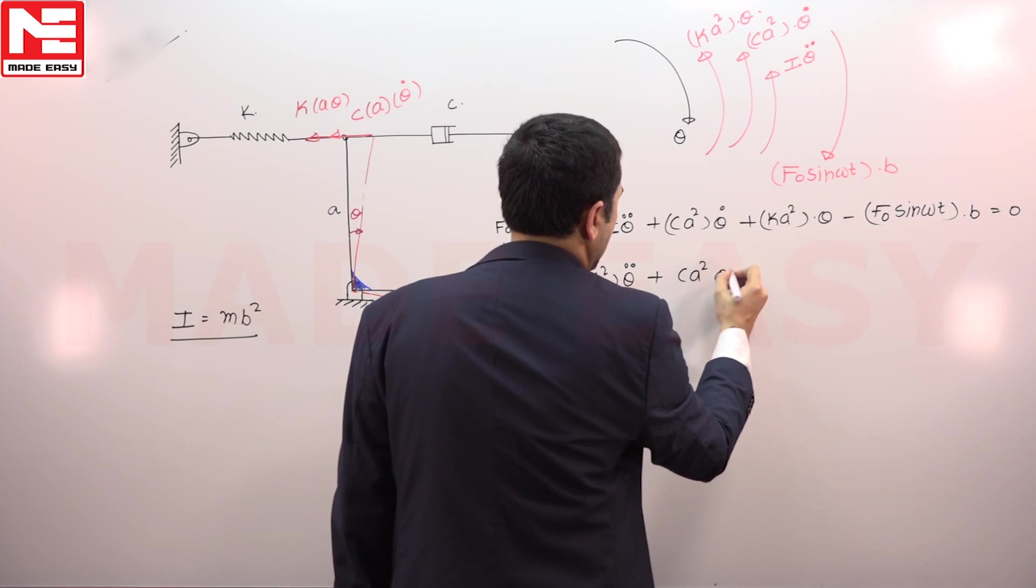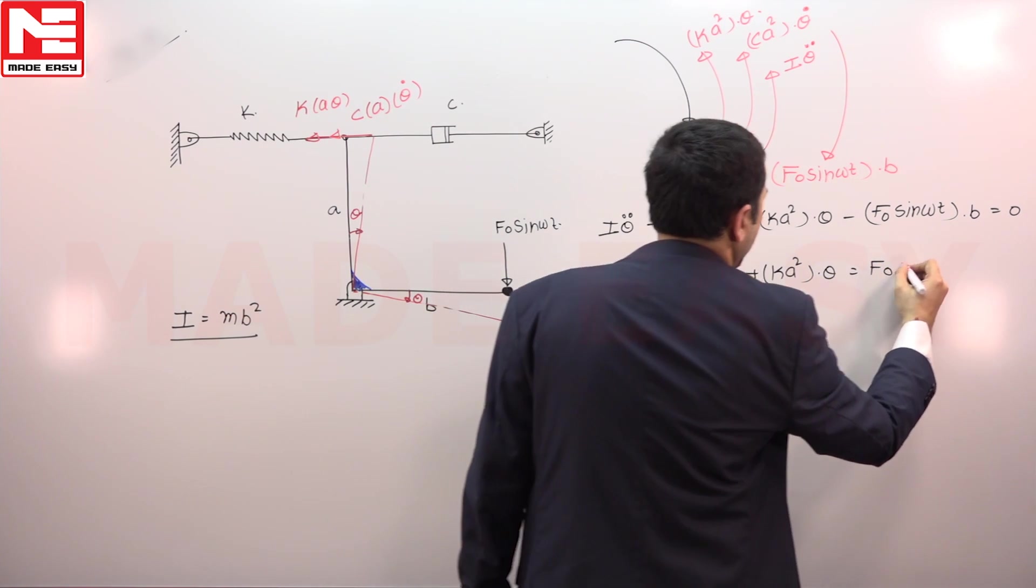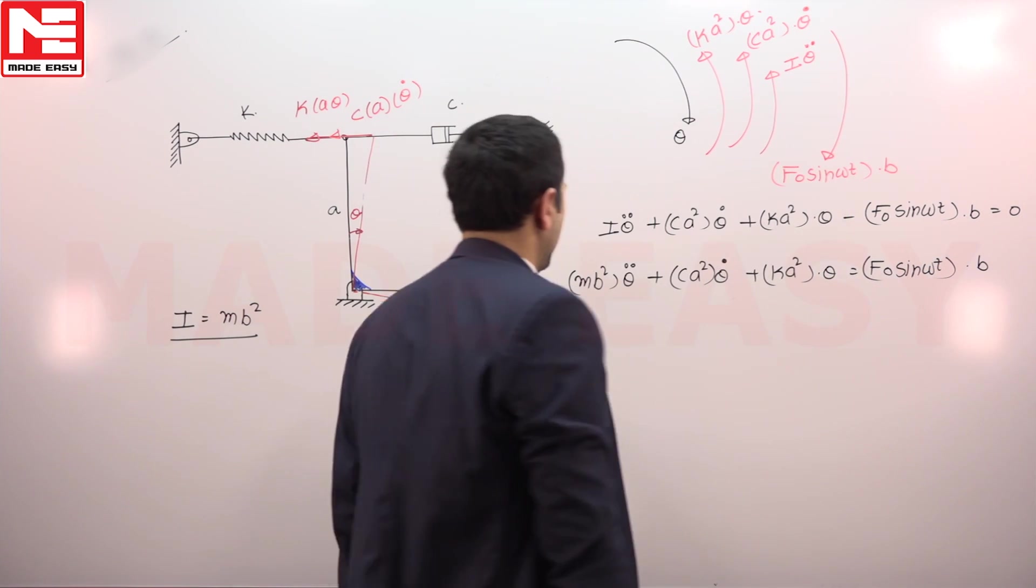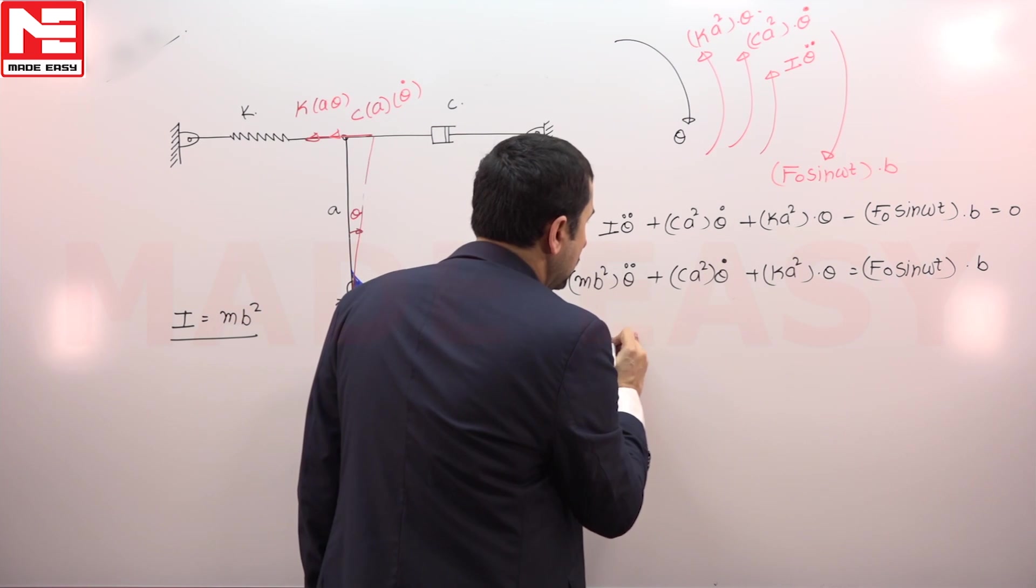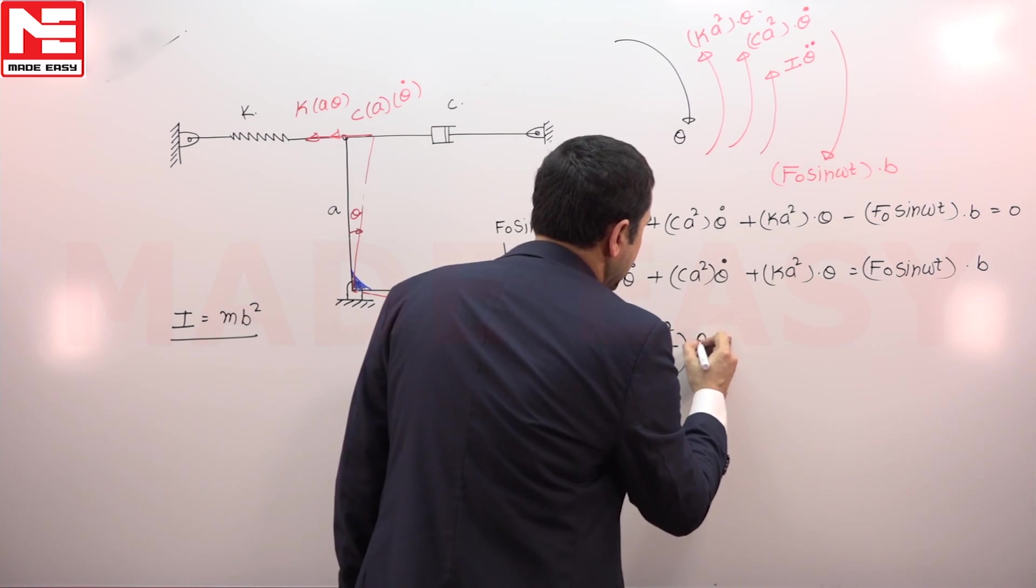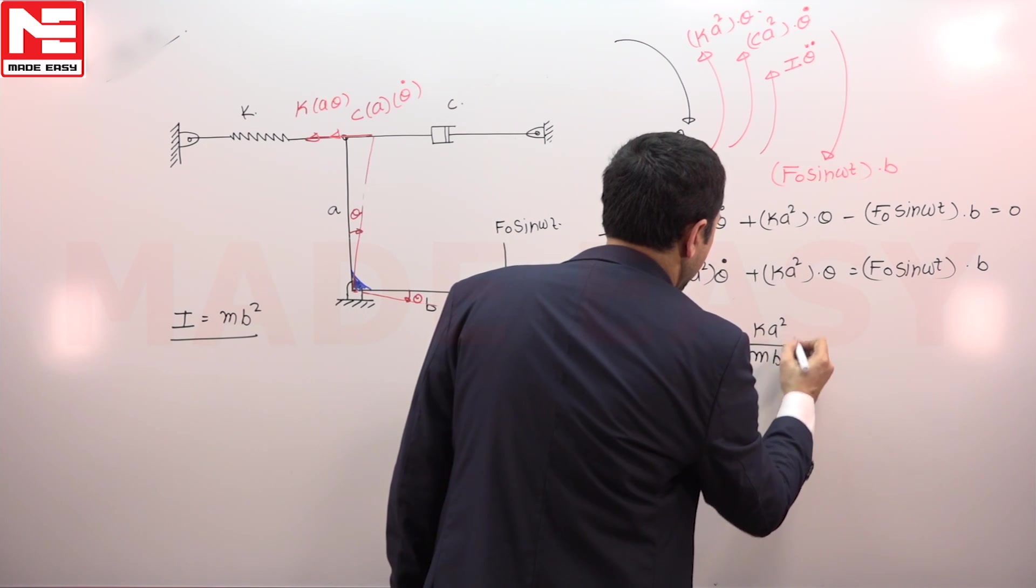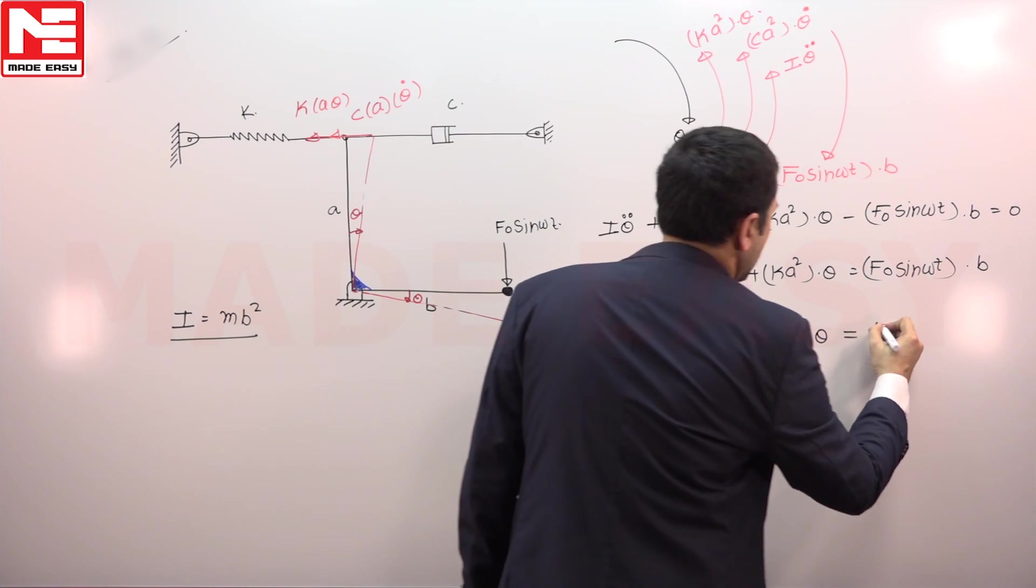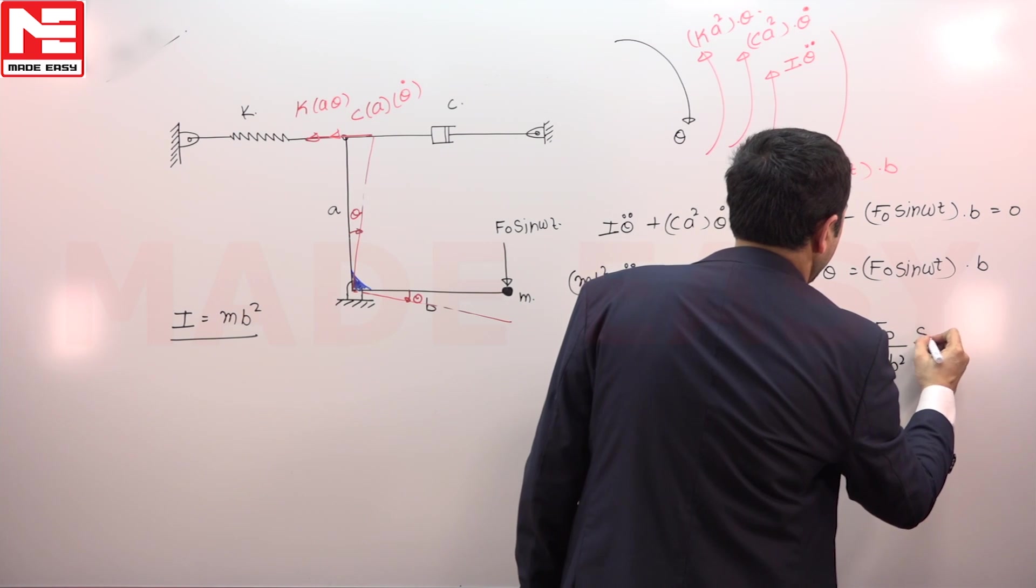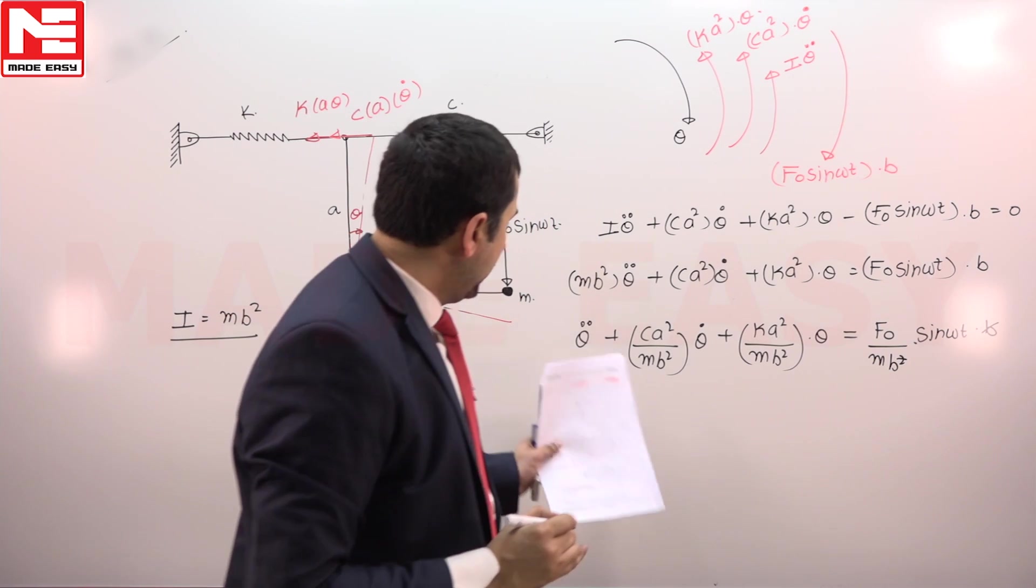So the I we know very well is m b square. So m b square theta double dot plus c a square theta dot plus k a square upon m b square into theta equal to F naught upon m b square sine omega t into b. One b will be cancelled out.